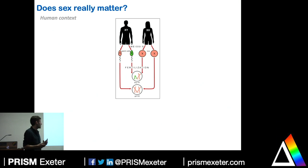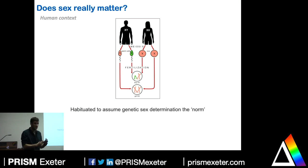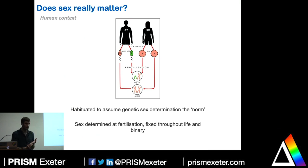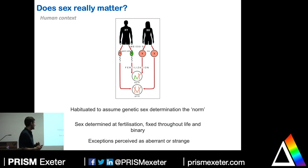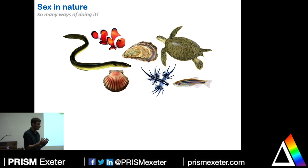So why is sex largely overlooked? As scientists and as society, we're really habituated to assume that genetic sex determination is normal — chromosomally determined, XX for female, XY for male. We're conditioned to understand that sex is determined at fertilization, fixed throughout life, and binary. Exceptions to this are widely perceived as aberrant or strange. A real mentality shift is required here, and looking at nature offers exactly the lens with which we can change perceptions. I want to talk through a number of ways in which moving beyond the binary in biosciences can help us understand organism responses and the diversity of sex within nature.